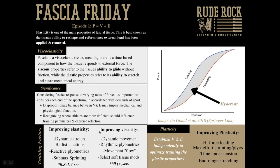For the viscous properties, we're thinking more about dynamic movement — low-level, rhythmic-based plyometrics, movement flow, organic movement patterns, and floor work. Select soft tissue modalities are also beneficial for viscous properties. Generally speaking, with viscosity we're looking at about 60 seconds and up. Just because we're doing something for long durations doesn't mean it needs to be static — it just needs to be continuous.